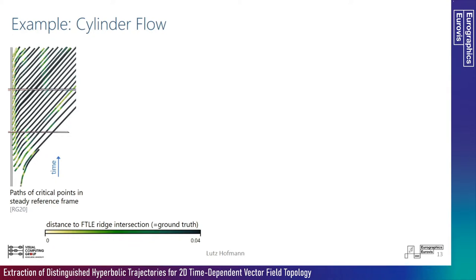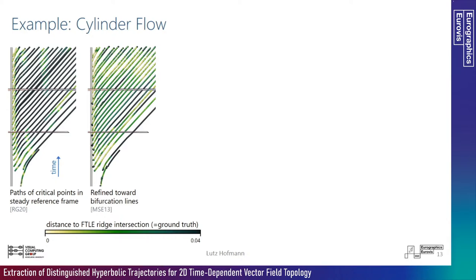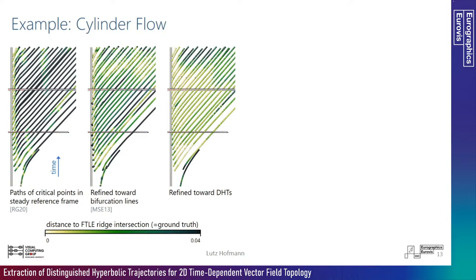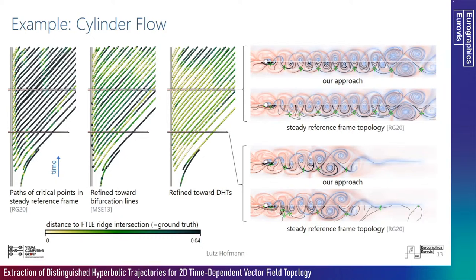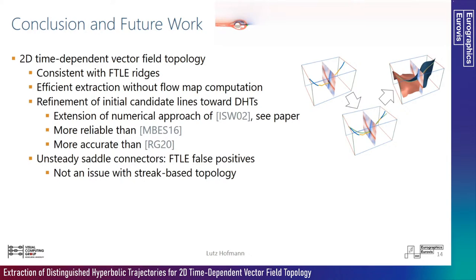As an example, we apply our approach to a numerical simulation of flow behind a cylinder. We use paths of critical points in the steady reference frame proposed by Rojo and Günther as initial candidates. The refinement scheme of Machado and colleagues can partially correct initial candidates toward the nearest FTLE-ridge intersection, but is unstable behind the cylinder and sometimes converges to the wrong pathline. Our refinement toward hyperbolic trajectories yields better results. Computing streak topology from these hyperbolic trajectories, we obtain streak lines well aligned with ridges in the forward and backward FTLE fields. The approach of Rojo and Günther, which extracts steady vector field topology in their steady reference frame, produces separatrices not well aligned with FTLE-field ridges, and these separatrices cannot intersect.